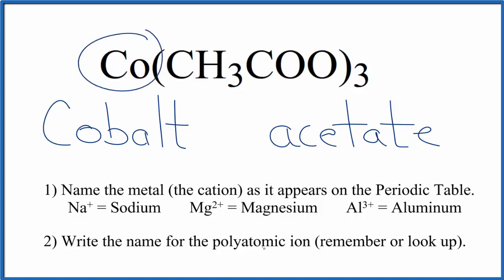But cobalt, that's a transition metal. So we need to think about the charge on the ions here. We know that the acetate ion, the whole thing, is one minus, and we have three of them. So the cobalt, we're going to have to have a three plus to balance out that three times the one minus.